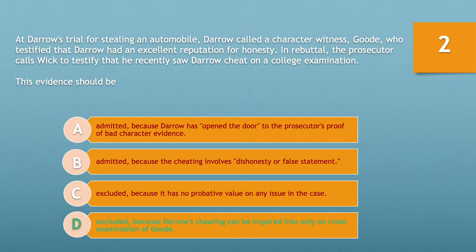If you chose answer D — excluded because Darrow's cheating can be inquired into only on cross-examination of Good — you'd be correct. Under the federal rules of evidence, the credibility of a witness may be attacked by any party, including the party calling him. Acts of misconduct by a witness that did not result in a conviction are admissible to impeach in both civil and criminal cases if those acts involve dishonesty.